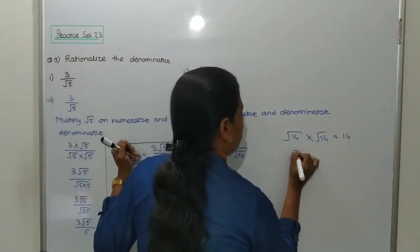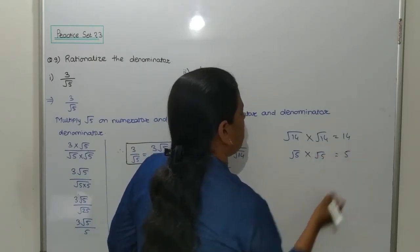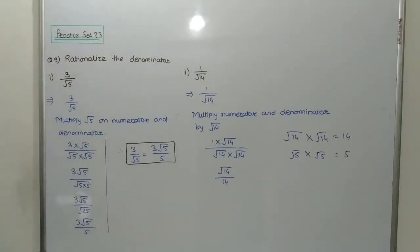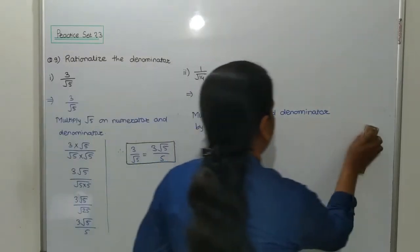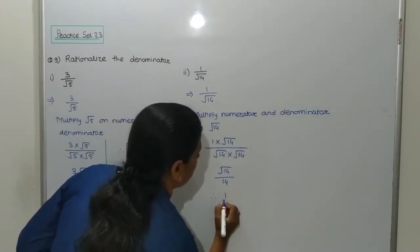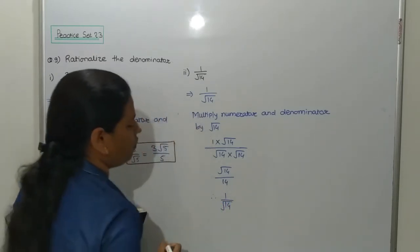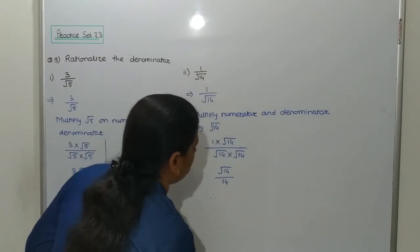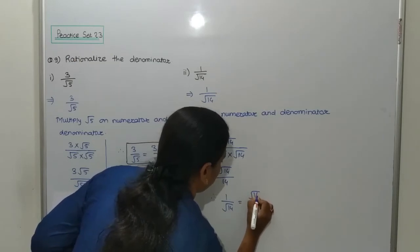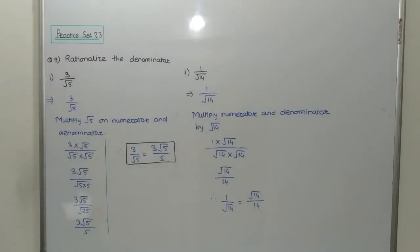In the previous example, root 5 into root 5 gives 5. You can write all these steps or write directly. Therefore, after rationalizing the denominator, 1 upon root 14 is equal to root 14 upon 14. This is your final answer of question number 2.